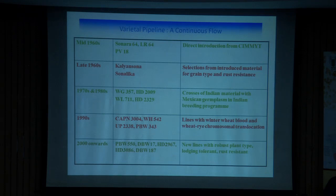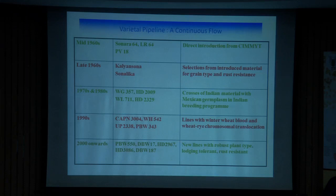Recently, PBW343 is a mega variety which ruled farmers' fields for more than 15 years. It succumbed to virulences of yellow rust in Punjab and Haryana states. Very recently, we have developed GW2967, DBW3086, and the current variety DBW187. These varieties have more than 7–8 tonnes of yielding ability and are resistant to different rusts.